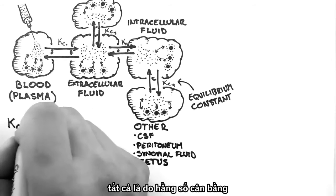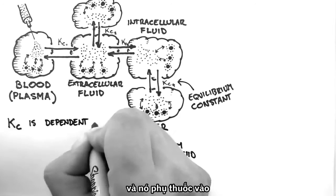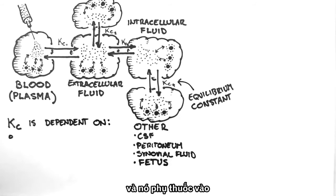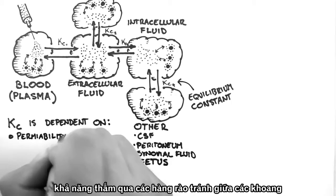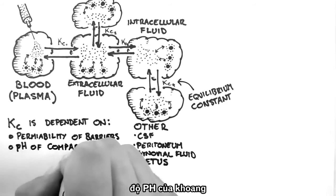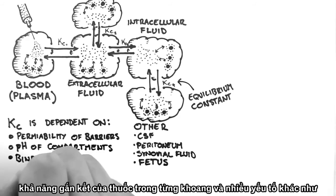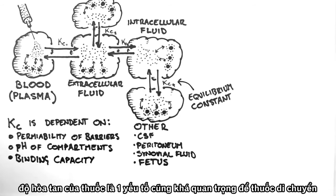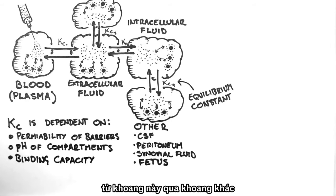Thus, I can say that the equilibrium constant is dependent on the permeability of barriers between compartments, the pH within the compartment, the binding capacity within the compartment, and numerous other factors such as the fat solubility of the drug, which is especially important for those moving into the fat compartment.